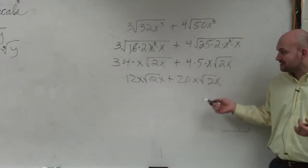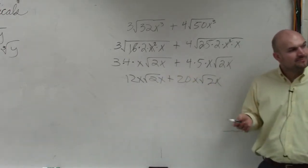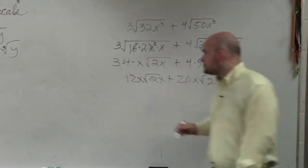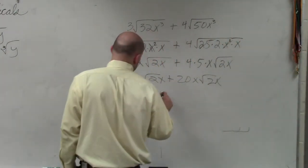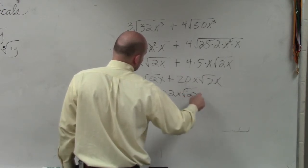Now I look at this and I say, hey, I have the same radicand and the same root. I can combine them. So I'm going to combine their coefficients and leave the radicand by itself. Therefore, I have 12x plus 20x, which is going to be 32x times the square root of 2x.